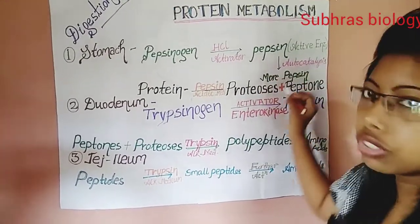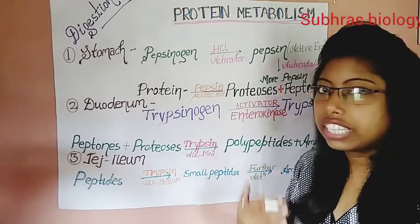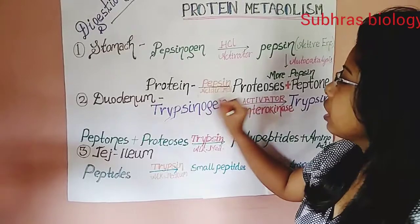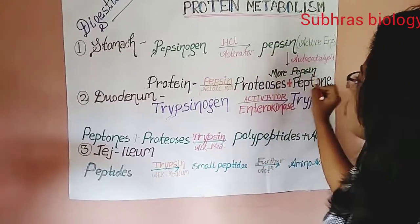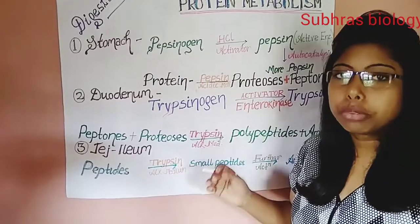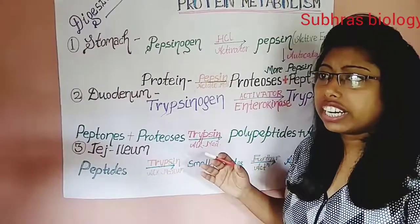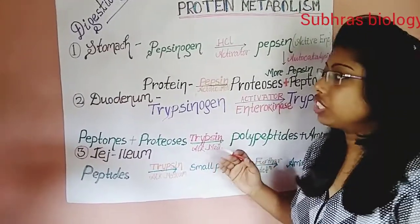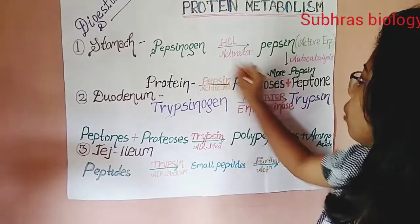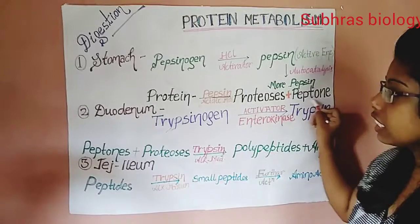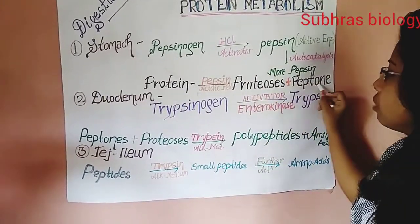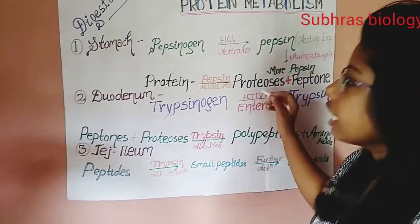More pepsin is formed in the stomach when we take a protein diet — for example, meat or fish. This pepsin, in an acidic medium at pH 1.6 to 3.0 (ideally pH 2.0), acts upon the protein materials to form proteases and peptons, which are smaller fragments of the protein.